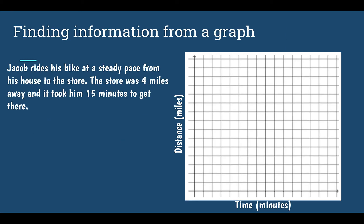So first let's look at finding information from a graph. Jacob rides his bike at a steady pace from his house to the store. The store was four miles away and it took him fifteen minutes to get there.